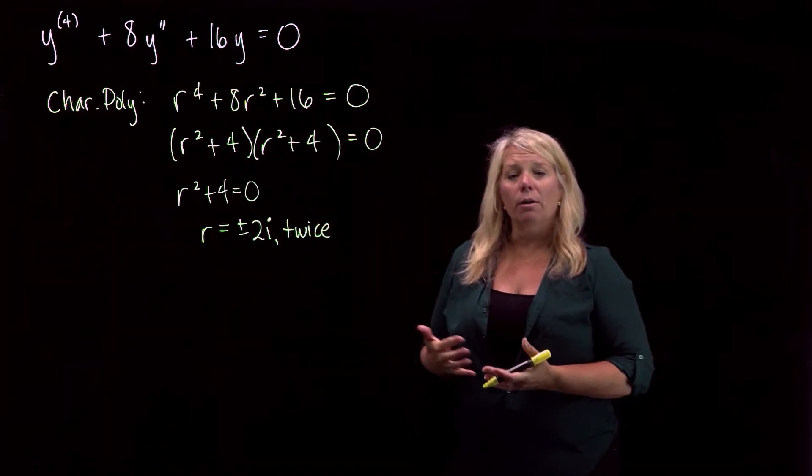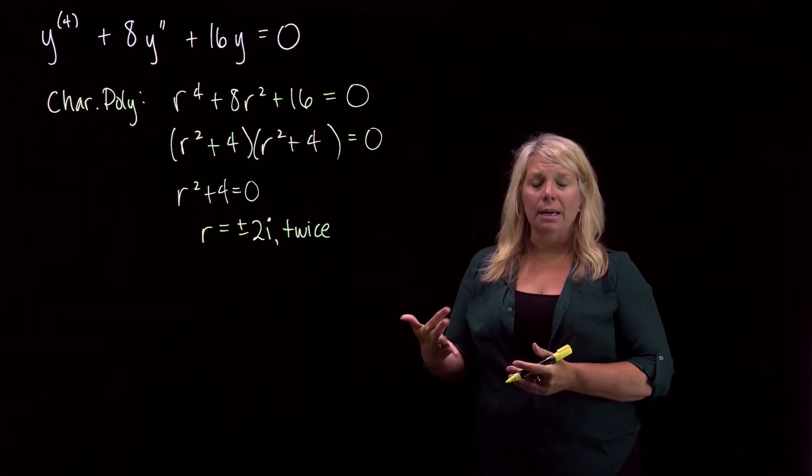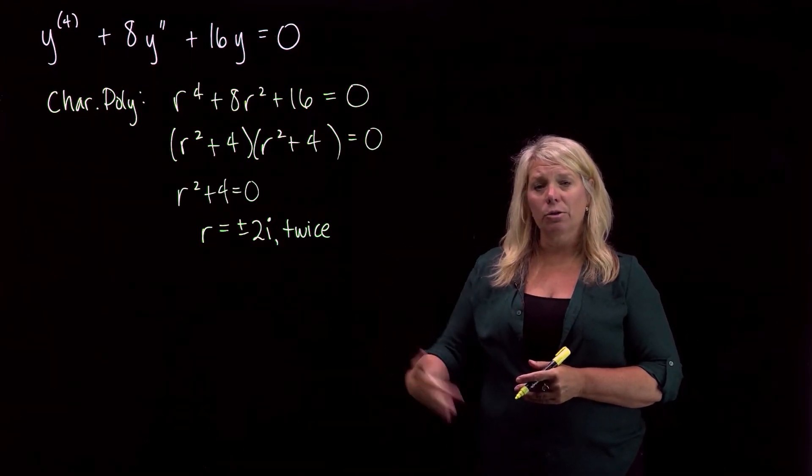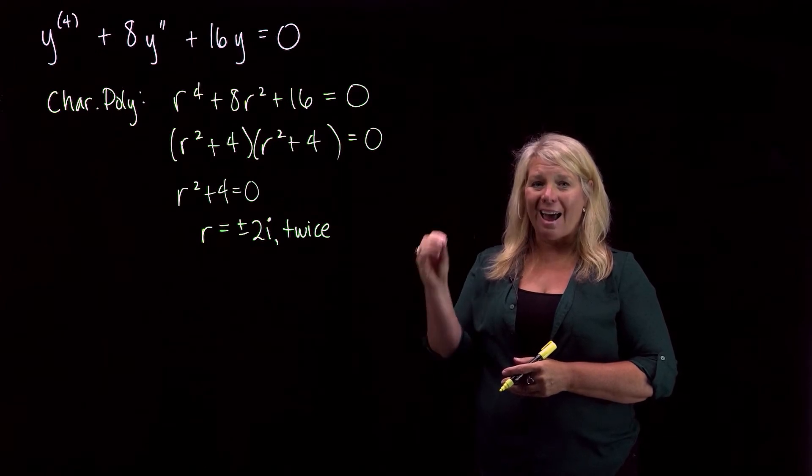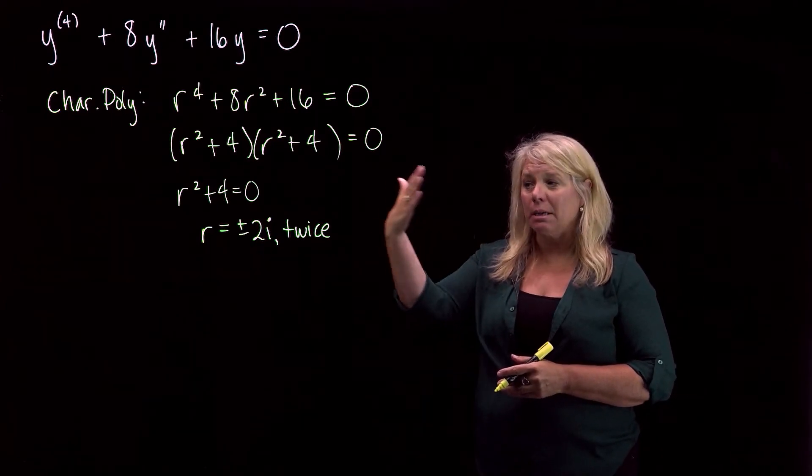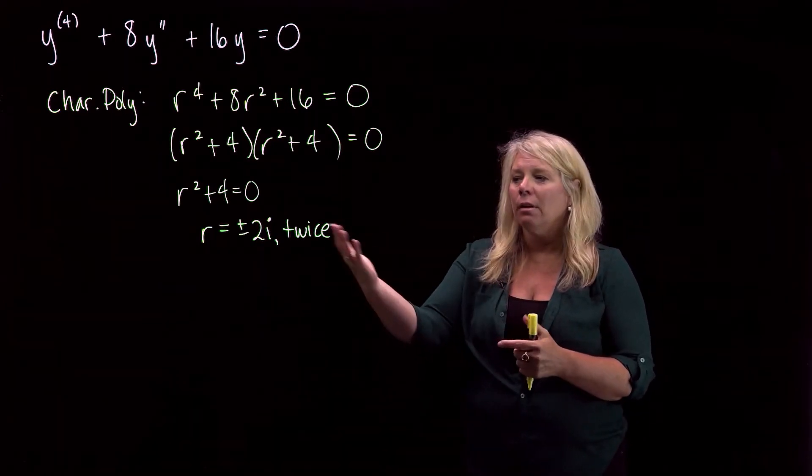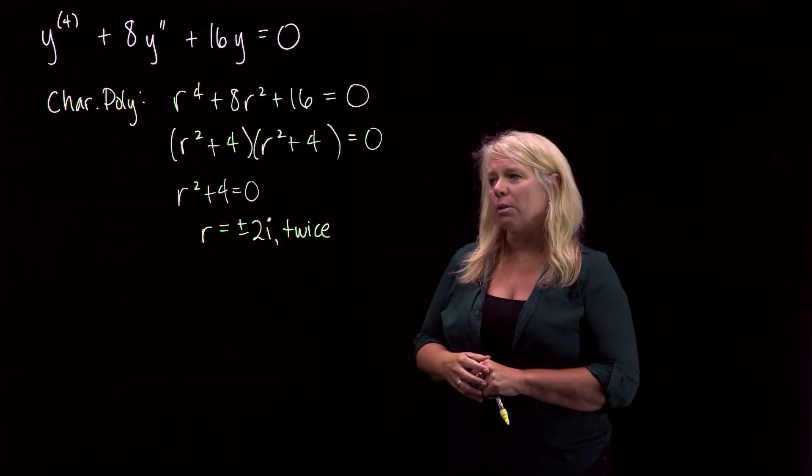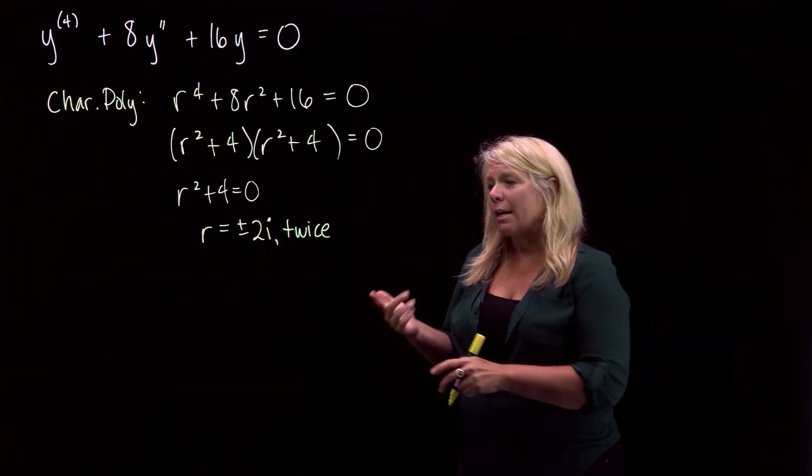So remember, when you have zeros with multiplicity, in order to get those other linearly independent solutions, you can multiply by x, powers of x, increasing powers of x until you get enough corresponding to the multiplicity here. Alright, so for the, let's focus first of all about the non real zeros.